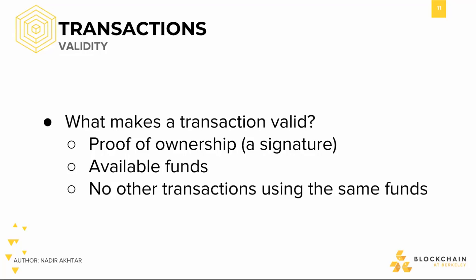Let's understand these criteria in the context of checks and banks. When you want to make a transaction via a check, you have to sign the check to validate it — that's a proof of ownership. The bank then has to verify that you have enough funds available. They must also ensure that you do not spend the same money more than once, such as spending two checks of $100 each when your account only has $100 in total.